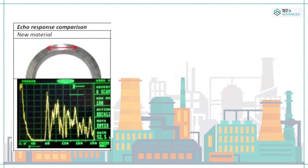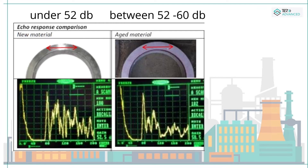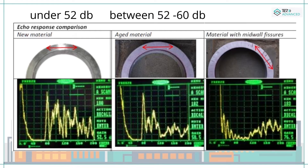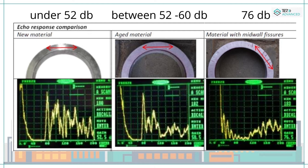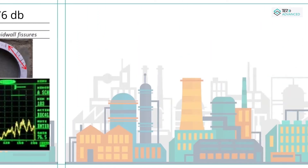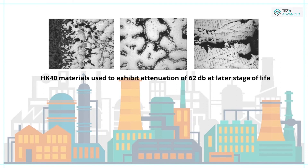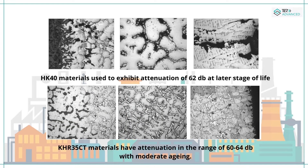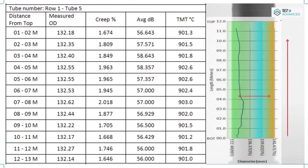Microstructural conditions are correlated from ultrasound attenuation values obtained by RTS. For instance, a new tube has attenuation under 52 dB; aged material has attenuation between 52 to 60 dB; and the worst condition forming micro cracks generally exceeds 76 dB. The microstructures and attenuation properties also depend on material of construction — for example, HK40 materials exhibit attenuation of 62 dB at later stages of life, whereas KHR35CT materials have attenuation in the range of 60 to 64 dB with moderate aging.